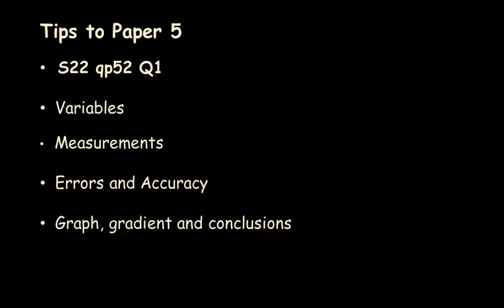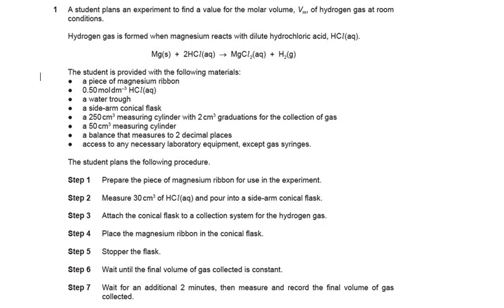In this video, let's discuss Paper 5 of A-level Chemistry, Summer 2022 Variant 2, specifically Question 1. We'll also discuss what the variables and measurements should be while planning an experiment, what are errors and accuracy, how to plot a graph and gradient, and how to draw conclusions from our analysis.